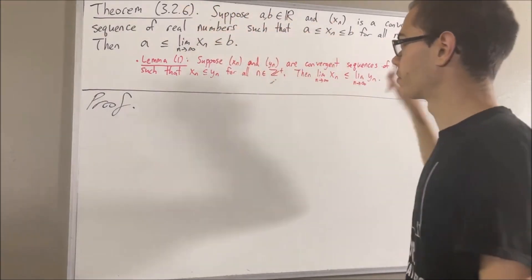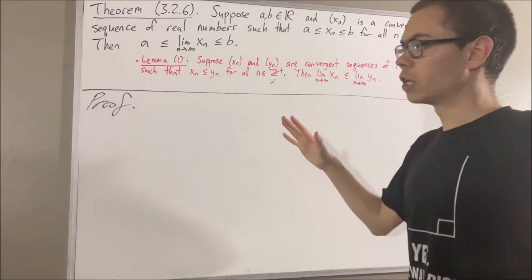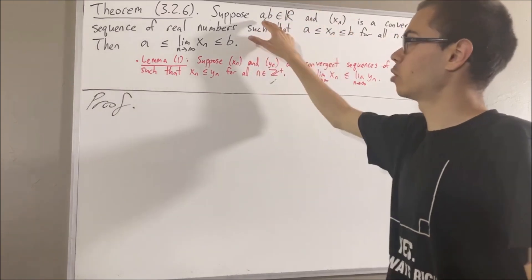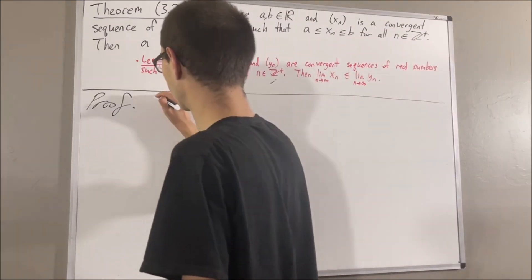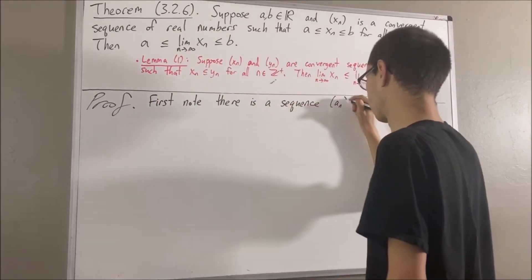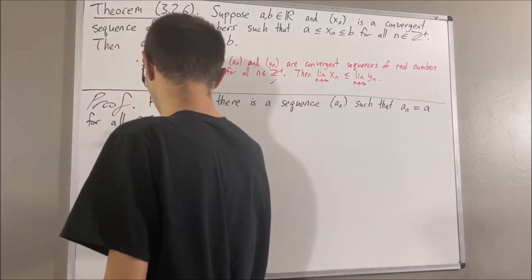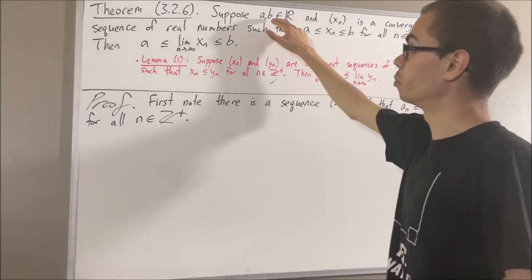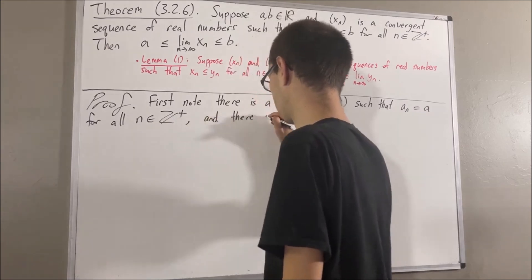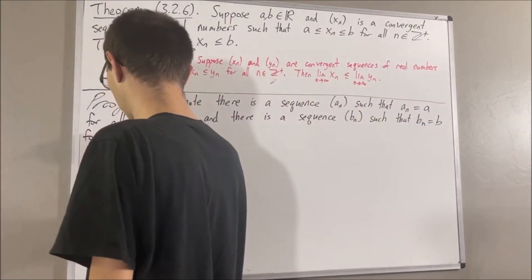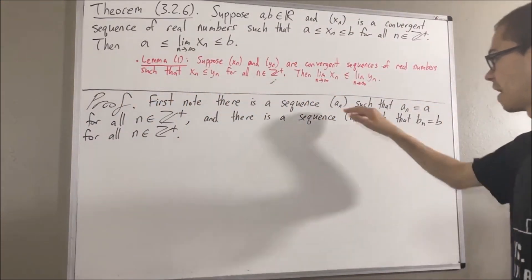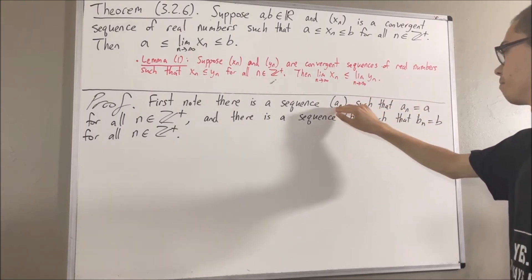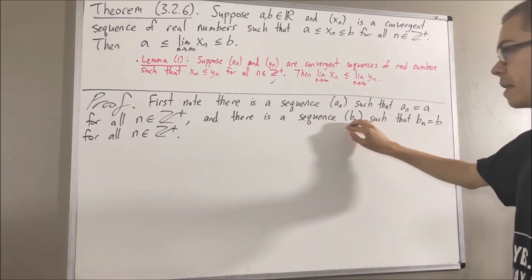So now let's get into proving this theorem. To start out the proof, let's first note that there is a sequence an, such that an is equal to a for all positive integers n. And also, there is a sequence bn, such that bn is equal to b for all positive integers n. These two sequences, an and bn, are constant sequences. Every term in the sequence an is a, and every term in the sequence bn is b.